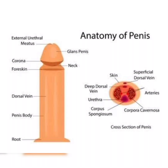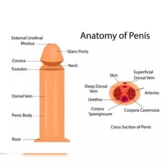Next are the testicles. The testicles are oval, separate organs within the scrotum responsible for producing sperm and testosterone. They are held in place by the spermatic cord and contain the seminiferous tubules where sperm cells are generated through spermatogenesis. The epididymis is a coiled tube located behind each testicle where sperm is stored and matured, making them capable of fertilization.